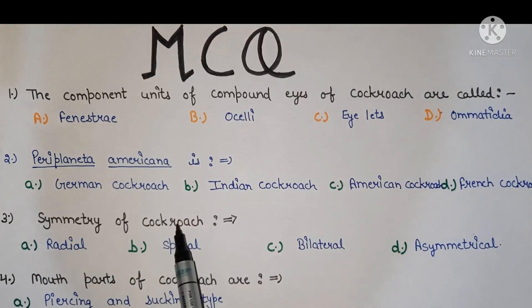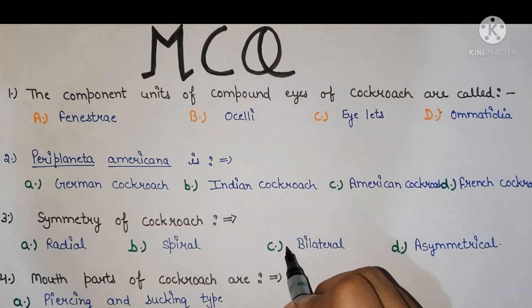Symmetry of cockroach is radial, spiral, bilateral, asymmetrical. Right answer is bilateral.